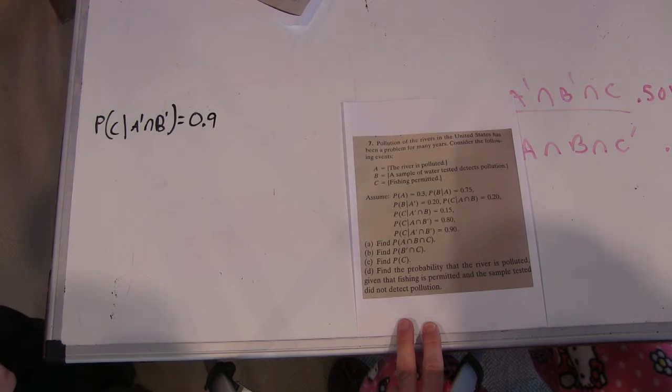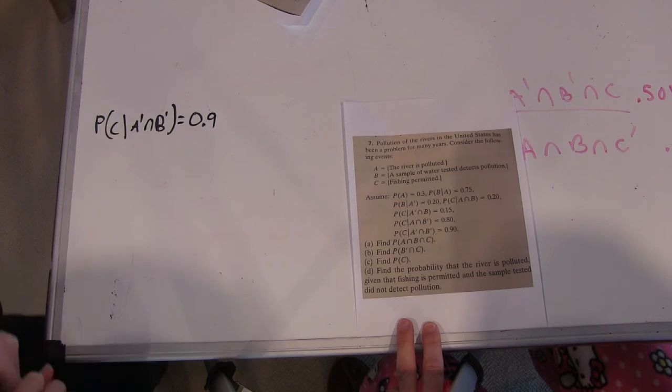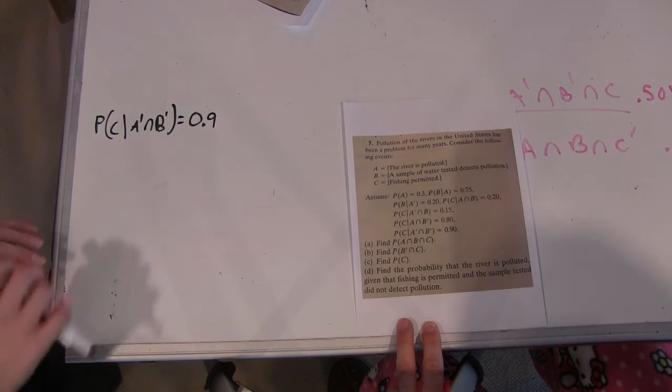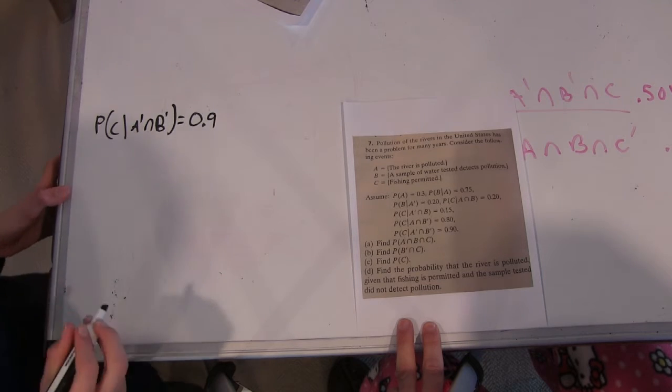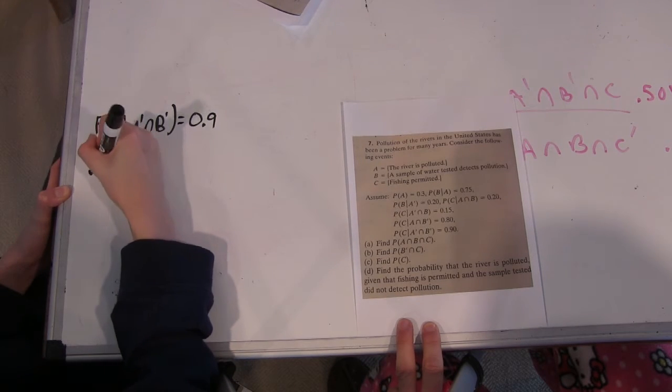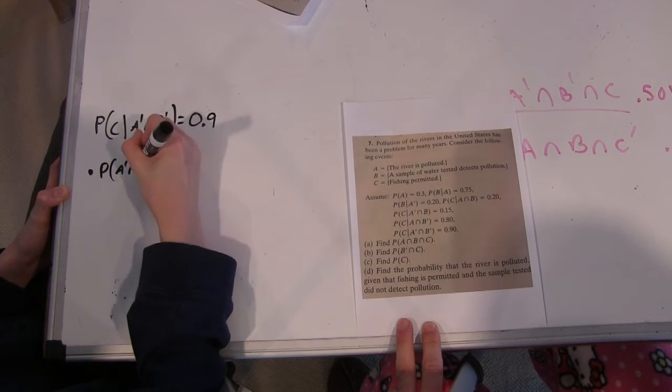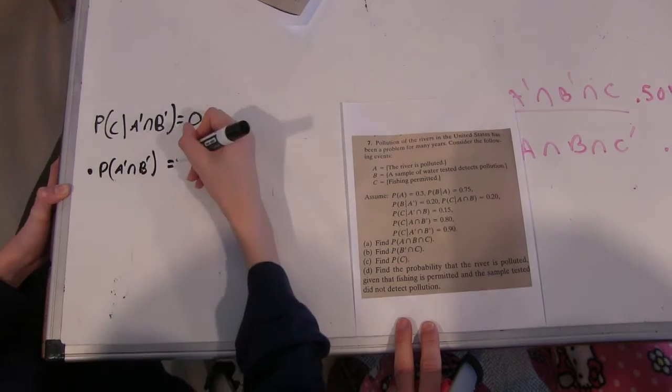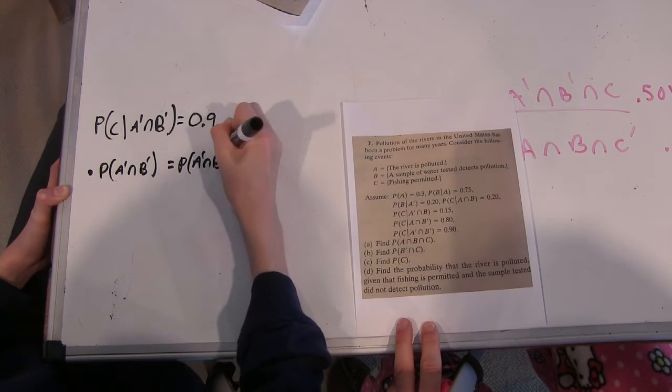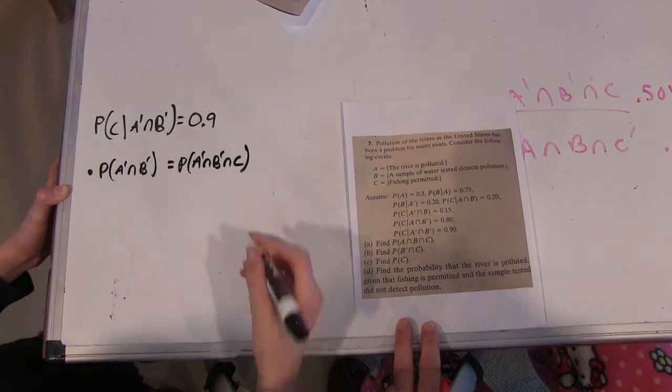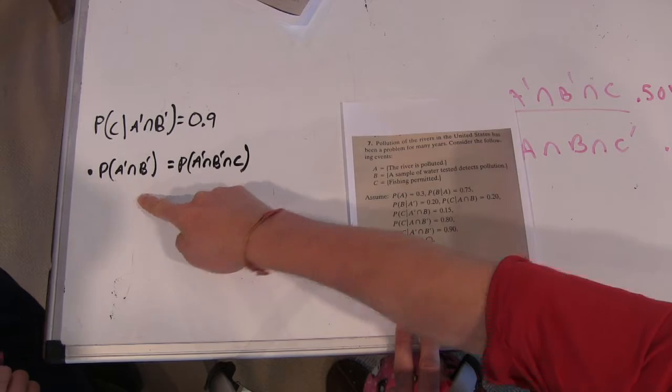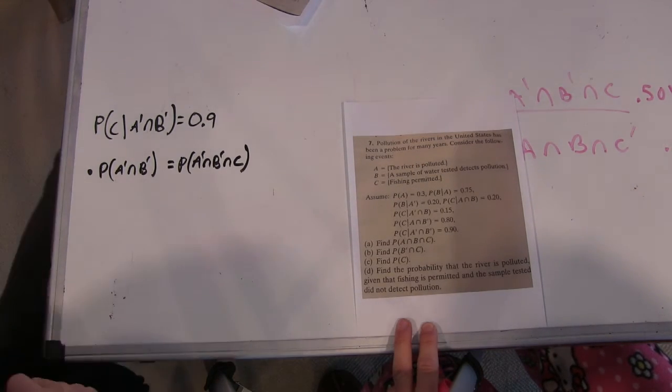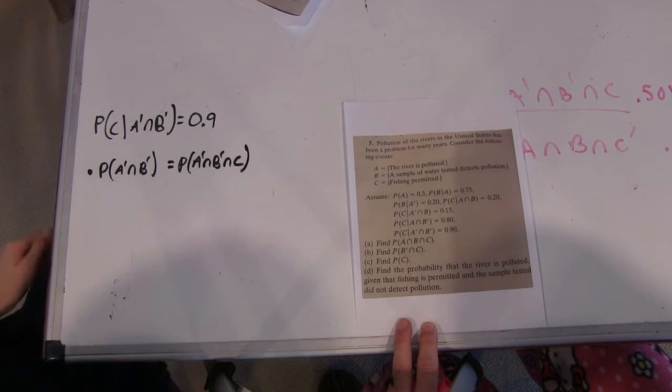And now that we have this, what we need to do to find A prime intersect B prime intersect C would be to multiply this by the probability of A prime intersect B prime. So we need to multiply this by P of A prime intersect B prime, and this will equal the probability of A prime intersect B prime intersect C. So you're saying we're going to take 90% multiplied by the probability of A prime intersect B prime. So now we need to find A prime intersect B prime.